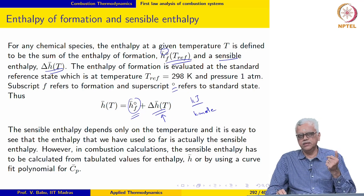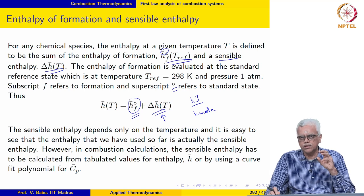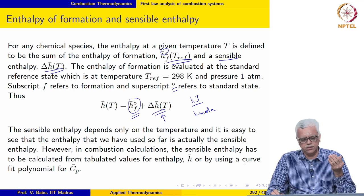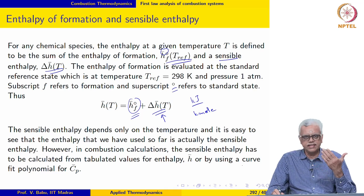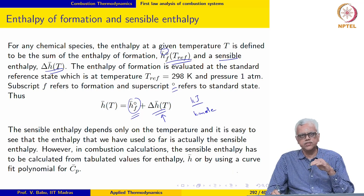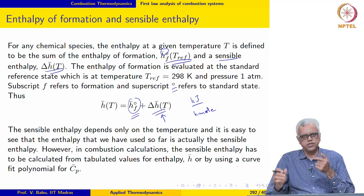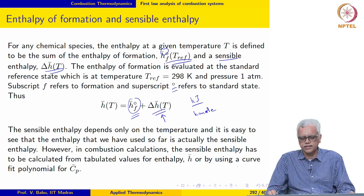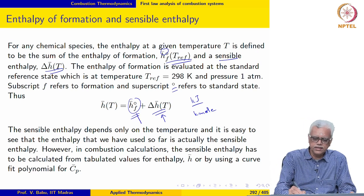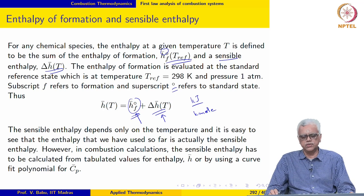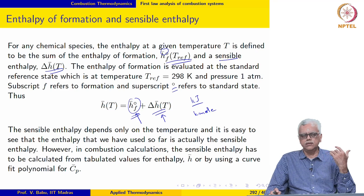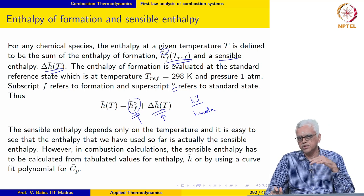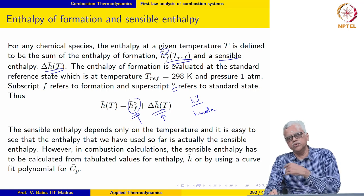Sensible enthalpy is a function of temperature, and for combustion calculations we will use tables for looking up values of sensible enthalpy. Of course, a curve-fit polynomial for C̄p may also be used to evaluate H̄ as C̄p times T. But we will use tabulated values of the enthalpy itself in this course. The most important thing is that we need to account for the energy contained in the bonds of the molecules when doing combustion calculations, because bonds in reactant species are broken and new bonds are formed to create product species.